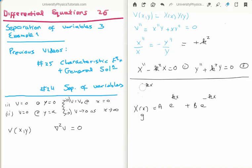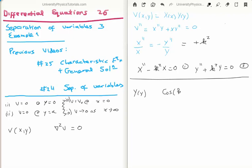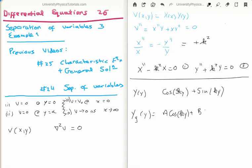With the Y equation, perhaps it is even simpler — the solution is going to be cosines and sines. Y, as a function of y, has particular solutions cosine of plus or minus ky and sine of plus or minus ky. The general solution for Y is a times cosine ky plus b times sine ky for the positive solutions, plus c times cosine of minus ky plus d times sine of minus ky.